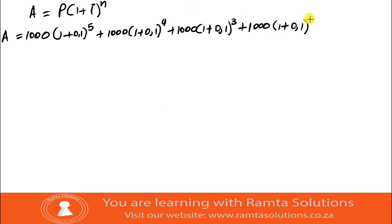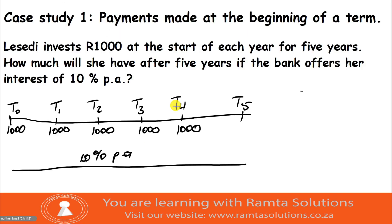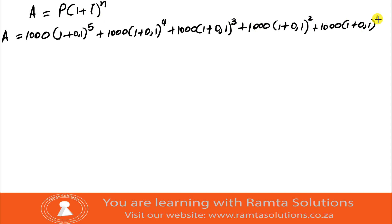The fifth payment was in the account for a full year, so it's to the power one. Now take out your calculator and press this so that we can find the amount that Lesedi will have after five years.